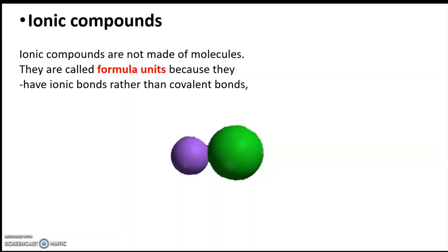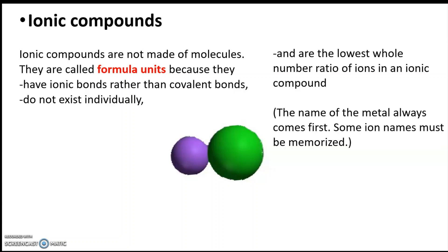There's no such thing as sodium chloride molecules. And instead, they're called formula units for a variety of reasons, for a number of different reasons. First, most obviously, they have ionic bonds rather than covalent bonds. But it goes further than that. They don't exist individually. You can have individual molecules. You don't typically have individual formula units. They form larger structures, which we're going to see. They're the lowest whole number ratio of ions in an ionic compound. That's what we use when we're writing a formula.